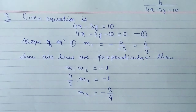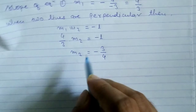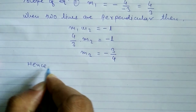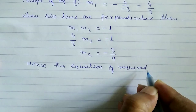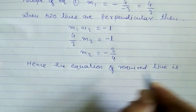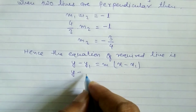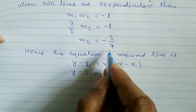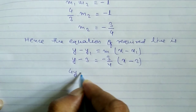We also have one point (2, 3) through which this line passes, and we have the slope m2. So by using the one-point formula we can get the equation of this line. The equation of the required line uses the formula: y minus y1 equals m times (x minus x1), where x1 is 2 and y1 is 3, and m equals minus 3 by 4.